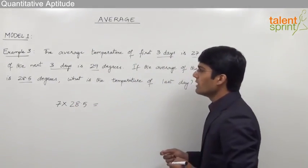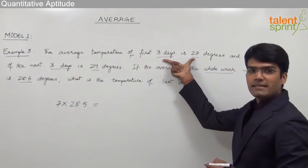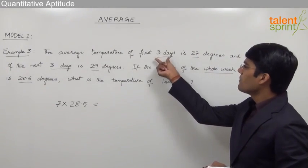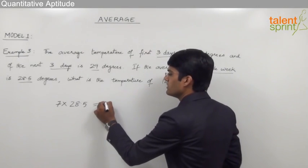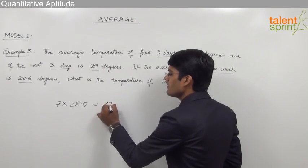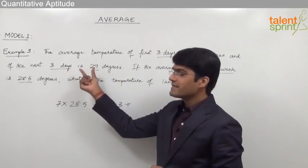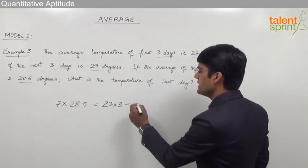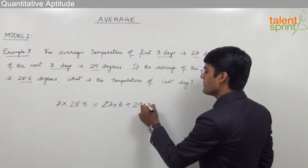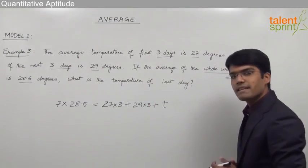And this should be equal to the total of the first three days, that is nothing but average into number of days, 27 into 3, plus the temperature of the last day. Let us take it as T.